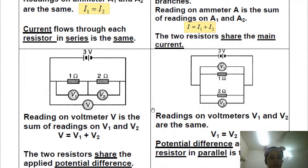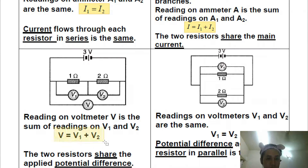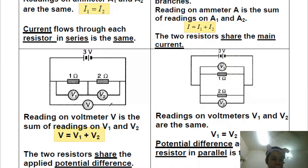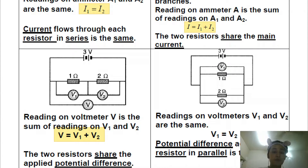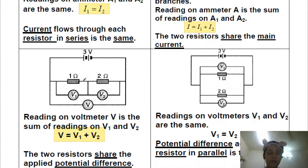That is the difference between series and parallel circuits in terms of current. Now in terms of voltage: for a series circuit, the voltage is shared. As current passes through each resistor, the voltage decreases. The reason why voltage decreases in a series circuit will be explained in more detail during our live session.